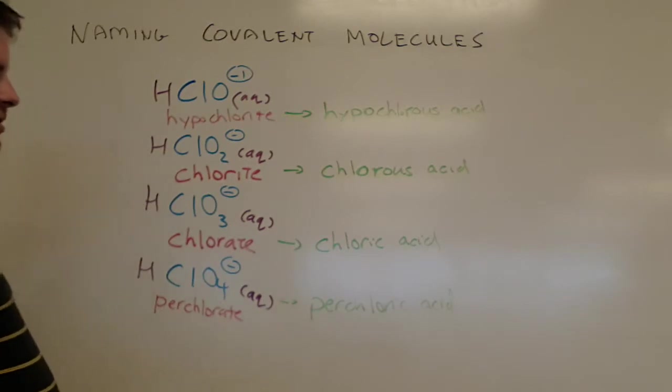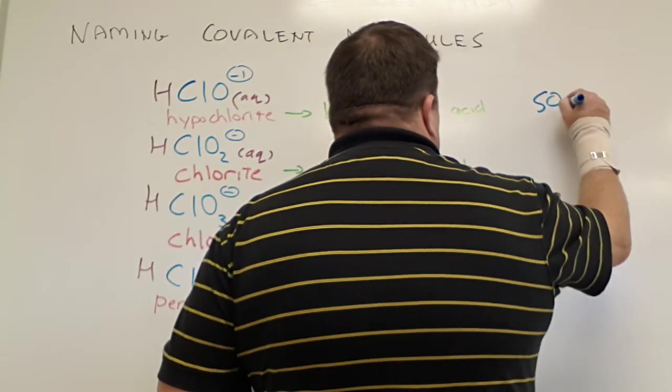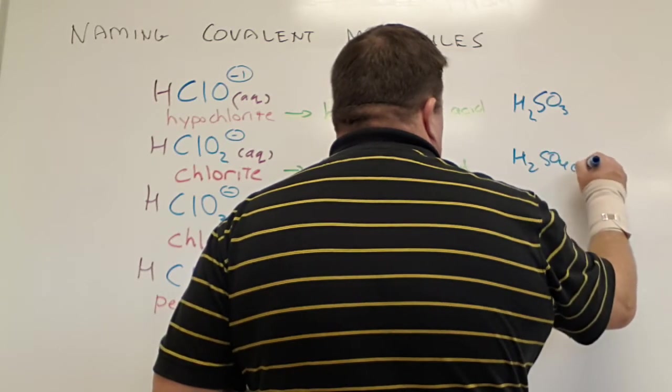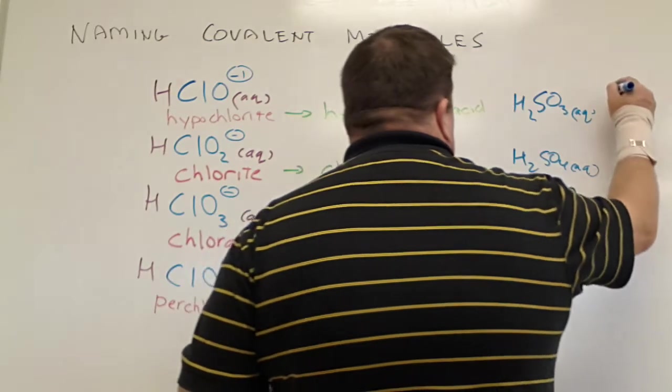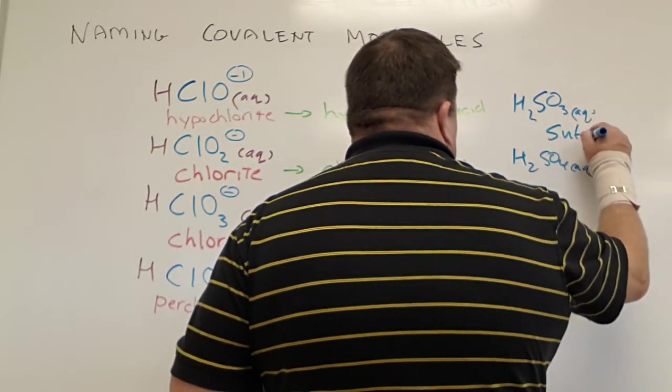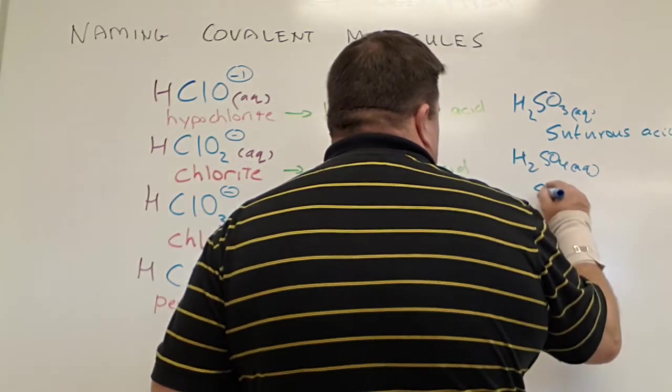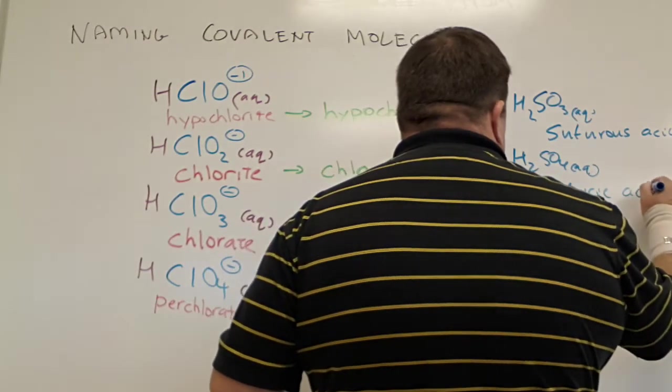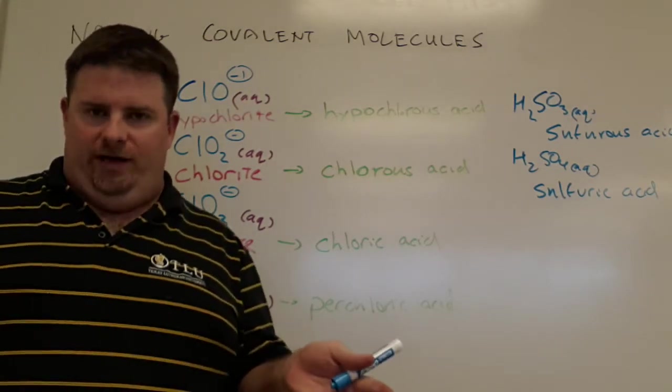The same type of naming conventions happen with other elements as well. So if I have SO3 2-, H2SO3, H2SO4, both of these aqueous, H2SO3 is going to become sulfurous acid. And H2SO4 becomes sulfuric acid. If I put a G after it, it's a gas. It becomes hydrogen sulfate.